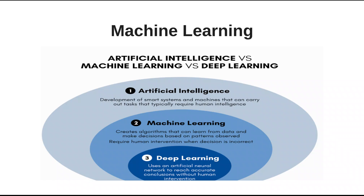Machine learning creates algorithms that learn from data and make decisions based on patterns, without requiring human intervention. Inside machine learning, deep learning is involved — it uses artificial neural networks to reach accurate conclusions without human intervention.